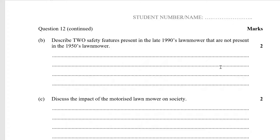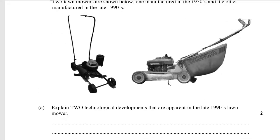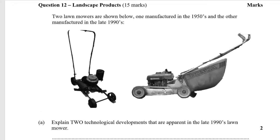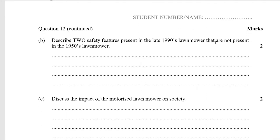Describe two safety features present: the body stops rocks from flying into your face and also prevents access to the blade. Having a self-starter is probably also safer — people are less likely to injure themselves. I don't really like this question because the syllabus doesn't explicitly say we need to study lawnmowers — I'd rather students understand the fundamentals than just the history of specific applications.